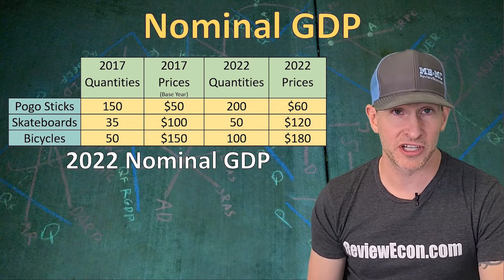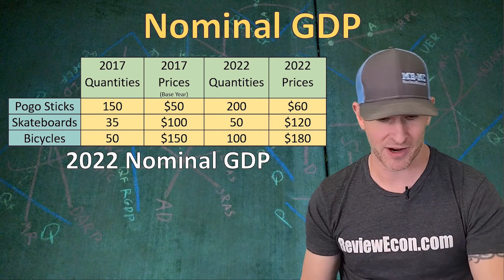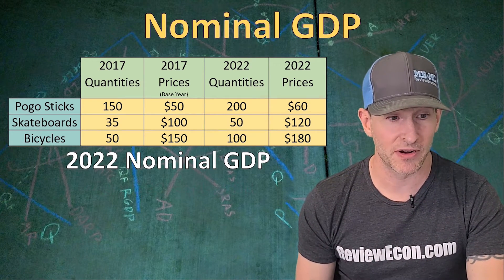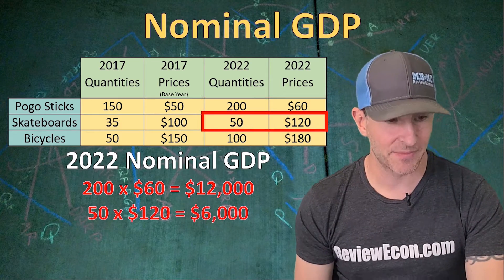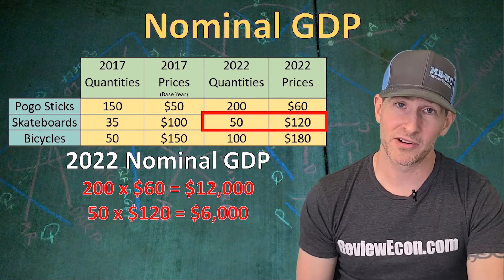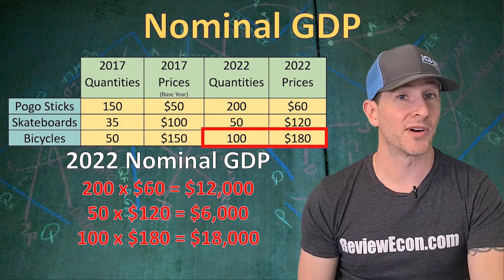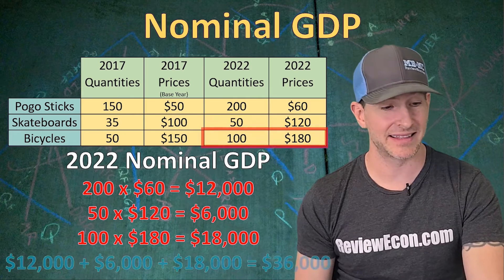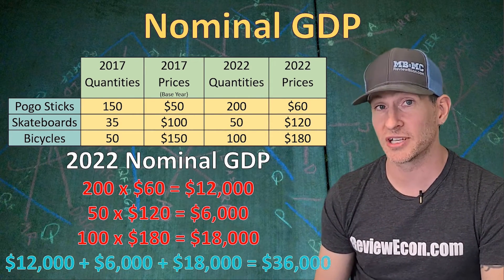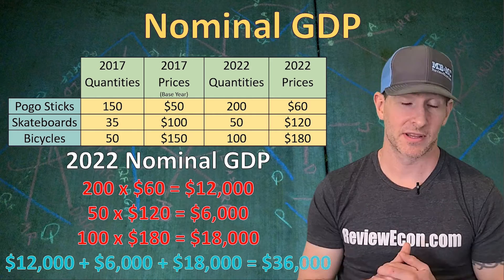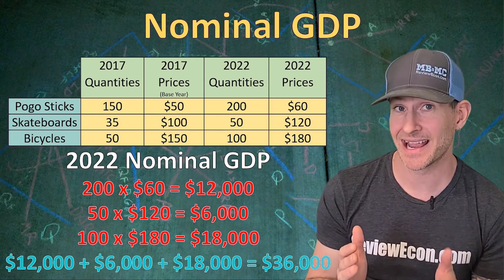To calculate the nominal GDP for 2022, we use the 2022 quantities and 2022 prices. That's 200 pogo sticks at $60 each, 50 skateboards at $120 each, and 100 bicycles at $180 each. Adding up $12,000 plus $6,000 plus $18,000 gives us $36,000 worth of nominal GDP for 2022. Nominal GDP is straightforward — just take the quantities for the given year times the prices for that same year.